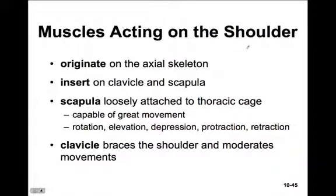The shoulder muscles originate on the axial skeleton and insert on the clavicle and scapula. The scapula is very loosely attached to the thoracic cage and is capable of great movement — all these movements: rotation, elevation, depression, protraction, and retraction. The clavicle braces the shoulder and moderates these movements.